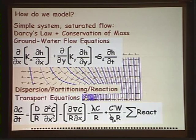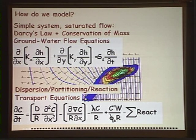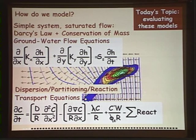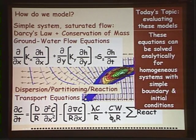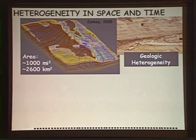If we add other processes such as dispersion, partitioning, and reaction, we can develop the contaminant transport equations where we can calculate concentration as a function of space and time. Today's topic is not about these models themselves, but about evaluating the quality of these models. We can use these equations to solve analytically for simple systems — homogeneous systems with simple boundary and initial conditions. But the trouble is that when we go to our field sites, we have very complex systems to deal with.